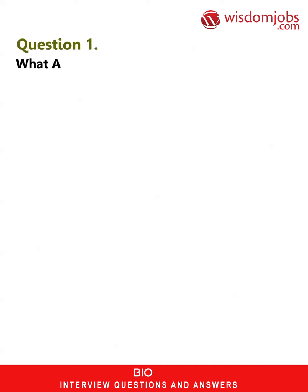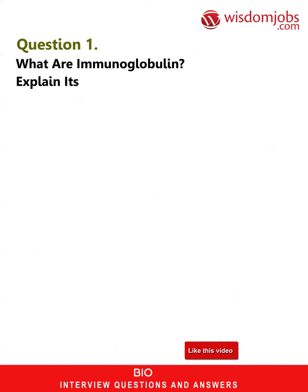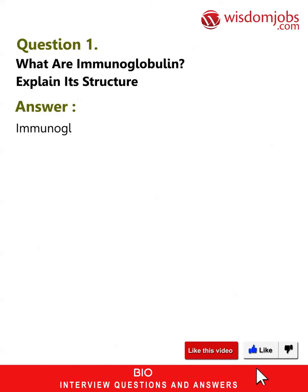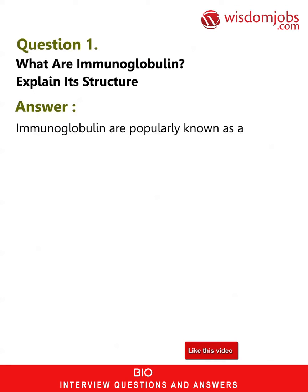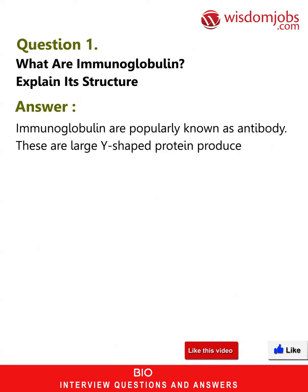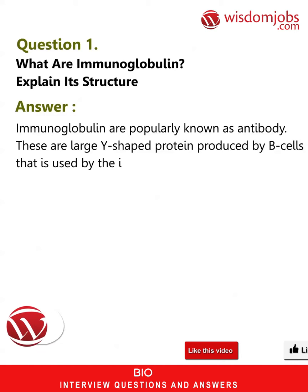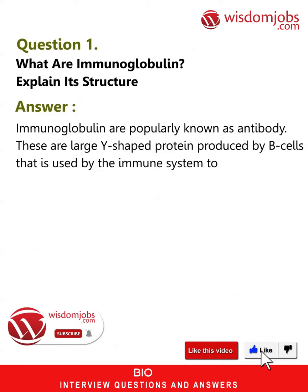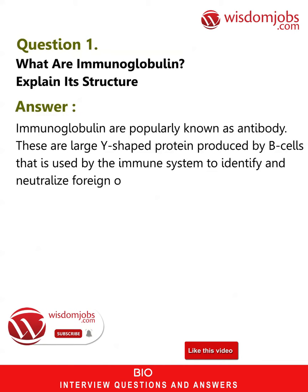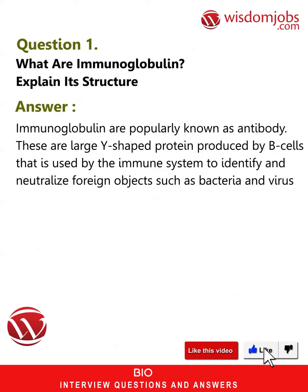Question 1: What are immunoglobulins? Explain its structure. Answer: Immunoglobulins are popularly known as antibodies. These are large Y-shaped proteins produced by B cells that are used by the immune system to identify and neutralize foreign objects such as bacteria and viruses.